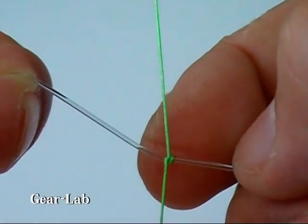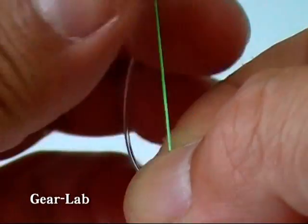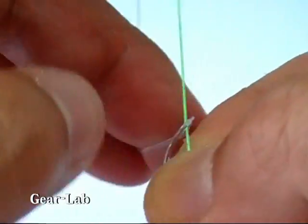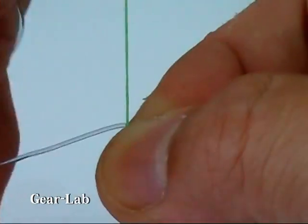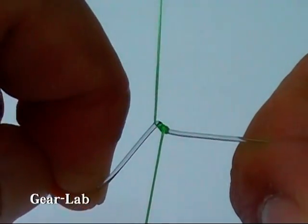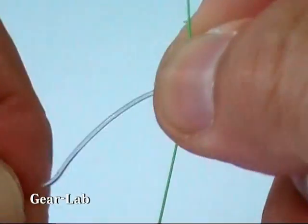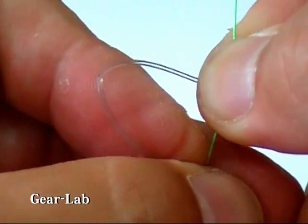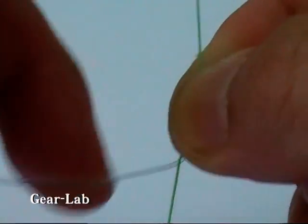Next, thread the shock leader from above and pull it tight. Next, thread it through the near side from above and pull it tight.